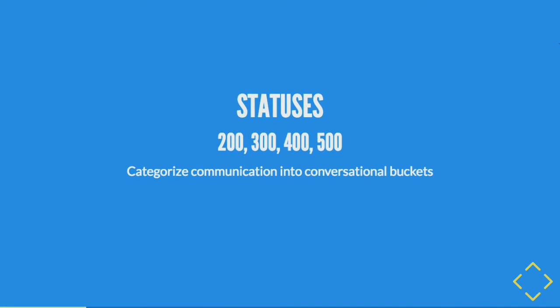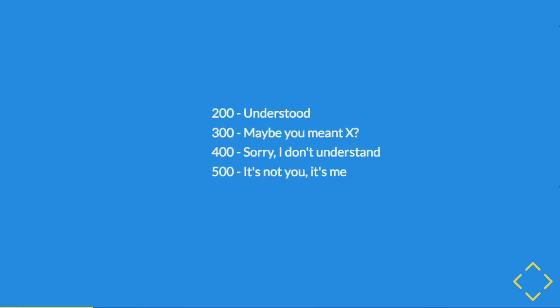Statuses come from the server side. Methods are what the client sends, and statuses are what the server sends back — they categorize communication between client and server. 200-level statuses basically say 'I understood your message, I did what you expected, we're all good.' 300-level says 'I understand what you're asking for, but maybe you meant this — you should be talking to a different resource.' 400 is basically 'client, you're drunk, go home' — it's a bad request, the client's fault. And 500 is 'it's not you, it's me' — whatever you did was okay but the server screwed up.